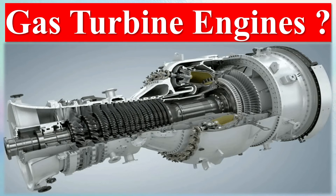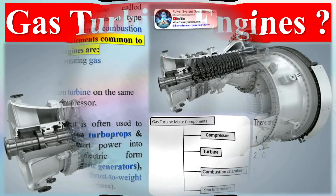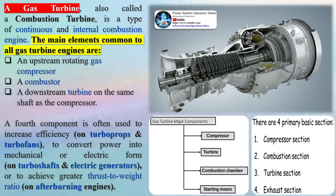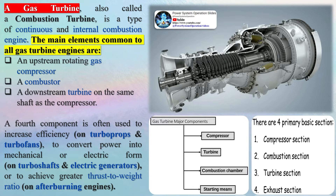A gas turbine, also called a combustion turbine, is a type of continuous and internal combustion engine. The main elements common to all gas turbine engines are an upstream rotating gas compressor, a combustor, and a downstream turbine on the same shaft as the compressor.